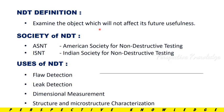Non-Destructive Testing is a method to examine an object without affecting its future usefulness. In the society of NDT, we follow two types of standards: ASNT — the American Society for Non-Destructive Testing — and ISNT — the Indian Society for Non-Destructive Testing. We follow their instructions, rules, and norms.